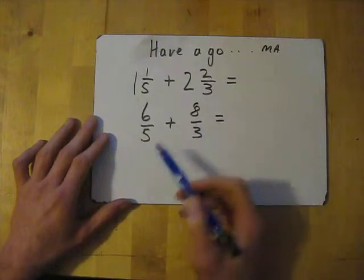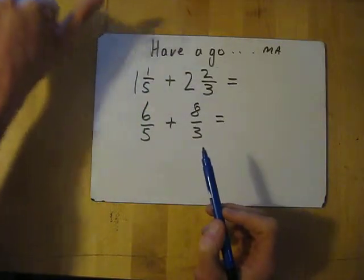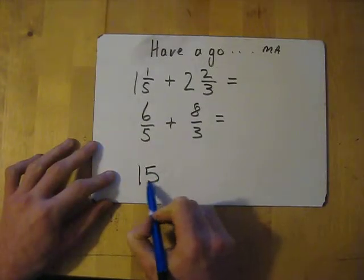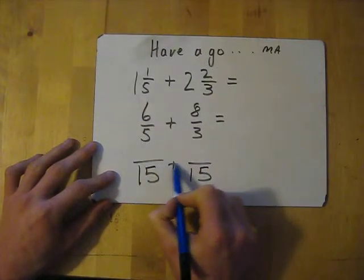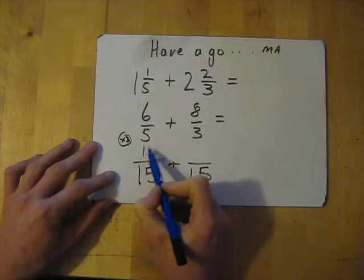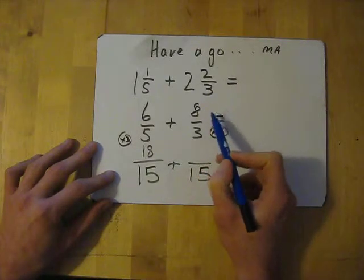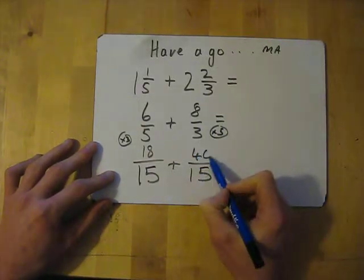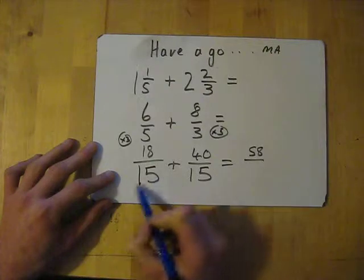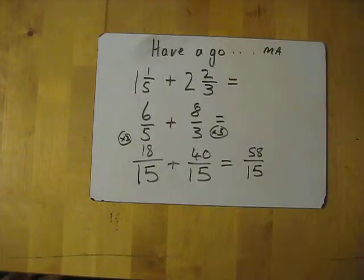Find the common multiple between 5 and 3: 5 doesn't work, 10 doesn't work, 15 — 3 times 5 — works. So convert them both into 15ths. What have we done to 5 to get 15? Times by 3, so times the top by 3 as well. What have we done to 3 to get 15? Times by 5, so times the top by 5: 8 times 5 is 40. Add the tops: gives 58. Keep the bottom the same, which is 15. So the answer is 58 over 15.